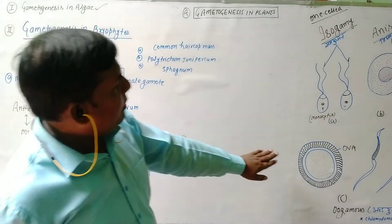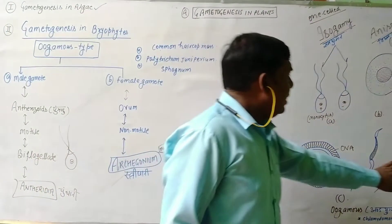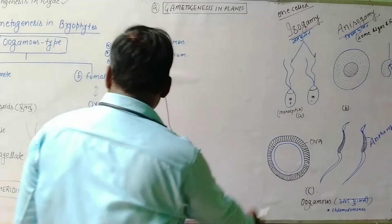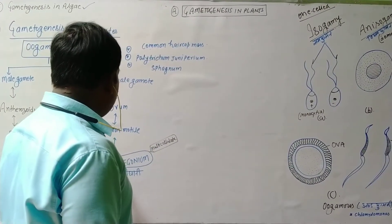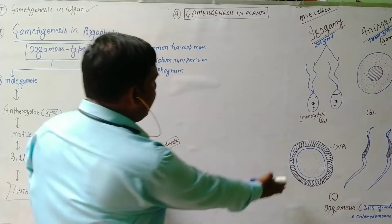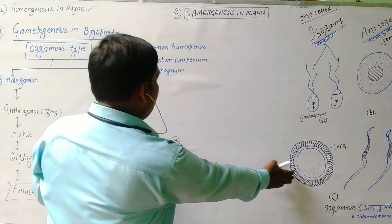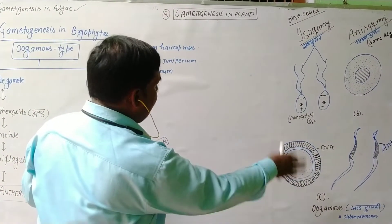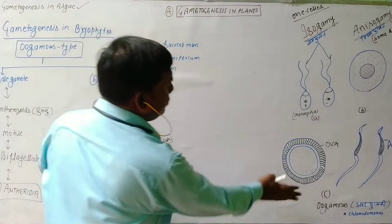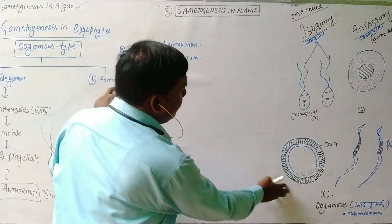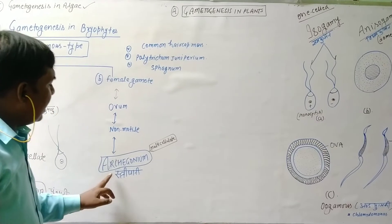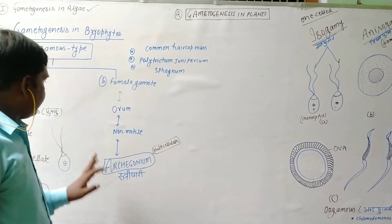This is called ovum and this is called antherozoids. Ovum is found in a multicellate structure that is called archegonium. This is non-motile ovum — megagametes — and it is also known as female gametes formed inside the archegonium.